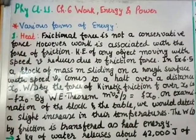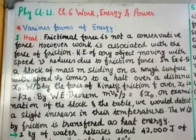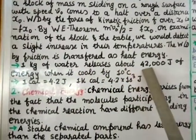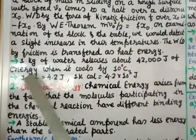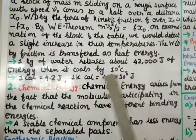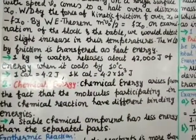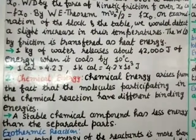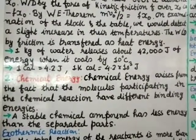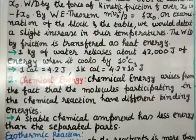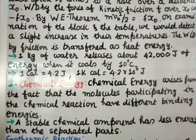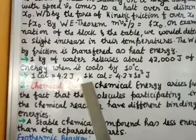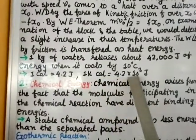Similarly, in winter if you rub your hands together, your hands get warmed up — heat energy is produced. One kg of water releases about 42,000 Joules of energy when it cools by 10°C. The conversion factors are: 1 calorie = 4.2 Joules, and 1 kilocalorie = 4.2 × 10³ Joules.